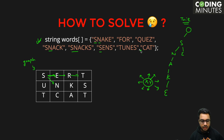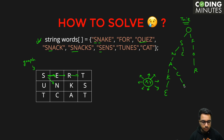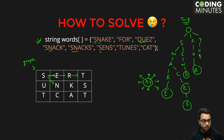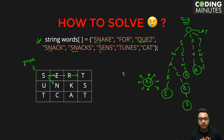We insert all words into the trie: snake, for, twist, snack, snacks, scns, tunes, and cat. Using this trie, you can figure out which directions to explore. You start from 's' and ask the trie — if I go to 'e', is that valid? It says yes. Then at 'e', you ask can I go to 'n'? Yes. The trie guides each step.